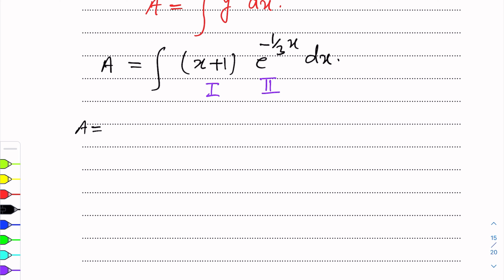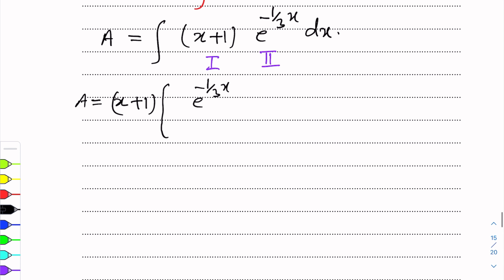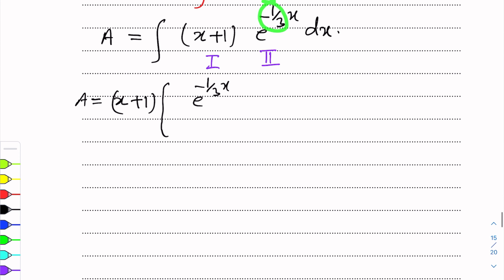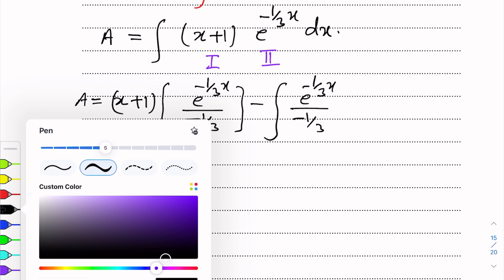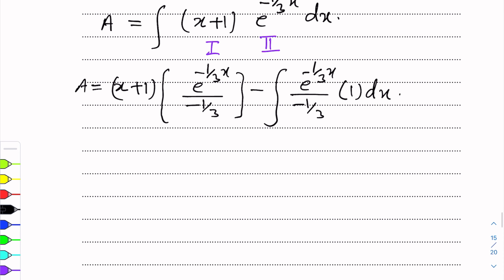Applying the formula: Area = (x+1) × integral of e^(-1/3 x), which equals (x+1)·e^(-1/3 x) / (−1/3). Dividing by (−1/3) brings −3 to the numerator. Minus integration of [e^(-1/3 x)/(−1/3)] × derivative of (x+1). The derivative of (x+1) is 1. Now we adjust and integrate the remaining function.